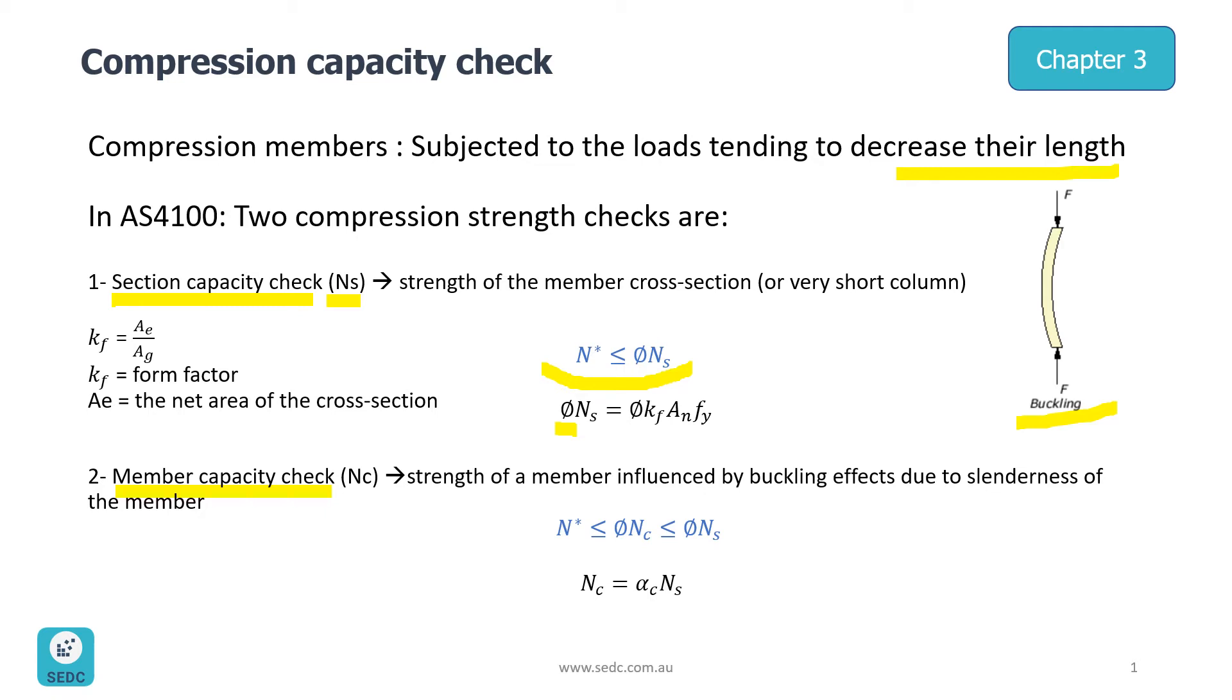You can see that in the next few slides, and as you can see Phi NS is equal to Phi KF AN FY. KF is form factor, AN is net area of cross section, and FY is yield stress. You can see in our practical example how we can get each one of these factors.